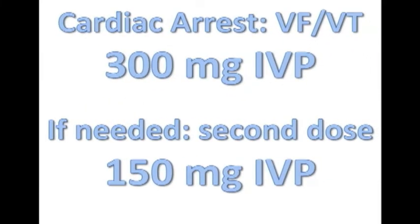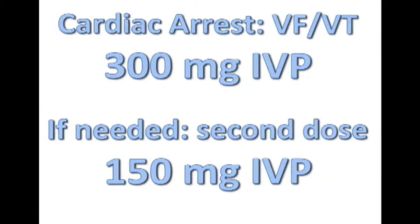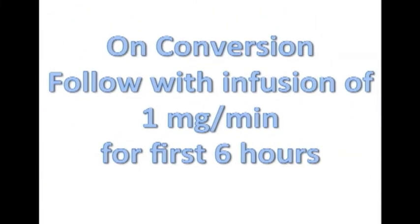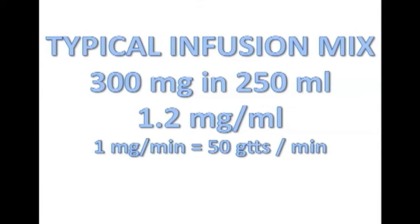The 2010 ECC guidelines recommend the following doses for amiodarone. In cardiac arrest for V-fib or pulseless V-tach: 300 mg IV push. If needed, a second dose can be administered: 150 mg IV push. For stable, wide-complex tachycardia: 150 mg slow IV over at least 8 to 10 minutes. A typical loading mix is 150 mg in 100 mL run in over 10 minutes. On conversion of the rhythm, follow with an infusion of 1 mg per minute for the first 6 hours. Typical infusion mix: 300 mg in 250 mL yields 1.2 mg per mL. To get 1 mg per minute, set for 50 drops per minute, or approximately 1 drop per second.